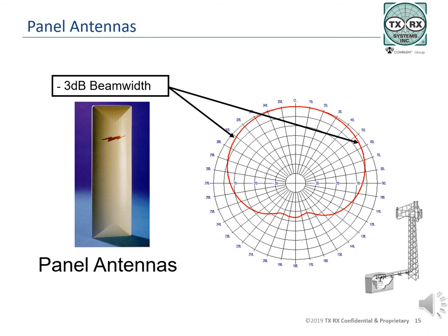Panel antennas are used extensively by cellular and PCS industries and not so much in land mobile radio applications. They are relatively small and have very clean patterns with an excellent front-to-back ratio. They work well in many areas where very specific coverage patterns are required, and have good bandwidth allowing many channels to be combined or multi-coupled onto a single antenna. The pattern shown here is for an antenna with 120 degree beam width, and as with all directional antennas, the beam width is specified at the 3 dB points. Most often these antennas are used in a sectorized system with antennas mounted on a tri-hat arrangement on the tower, effectively resulting in an omnidirectional pattern.